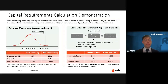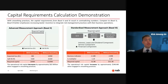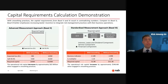Under the advanced measurement approach in Basel II, capital covers the difference between the 99.9% VAR and the expected loss. For simplicity, we assume the VAR and expected loss from the trading desk is similar to the overall bank. With smoothing practices, the expected loss would be $8 million with a VAR of $51 million. Once the scandal was uncovered, the new VAR would have increased to $252 million, meaning an additional $65 million in capital would have to be held to comply with regulators.